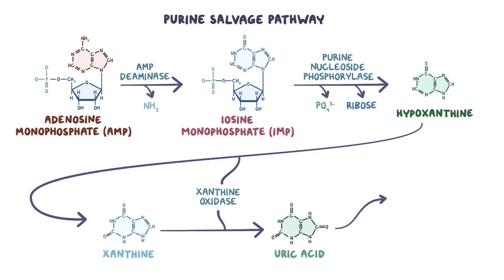Uric acid can then be filtered out of the blood and excreted into the urine. Those intermediate molecules in purine degradation — guanine and hypoxanthine — can be restored into fresh new nucleic acids through the salvage pathway. There's an enzyme called hypoxanthine guanine phosphoribosyl transferase, or HGPRT for short, which returns ribose and phosphate back to guanine to form GMP, and to hypoxanthine to form IMP. From there, IMP can become AMP again.